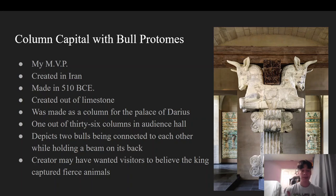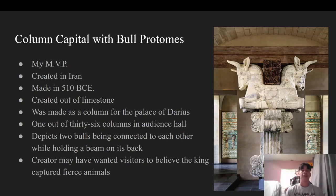This column was created in Iran around 510 BCE. It was created out of limestone and was made for the palace of Darius. It was actually one out of 36 columns in the audience hall in the palace, and all the other columns had different animals on them too.